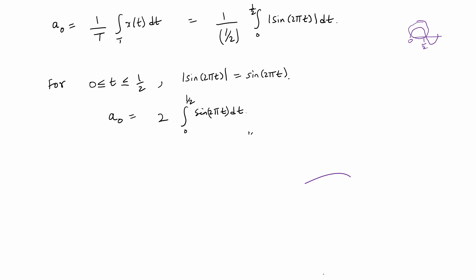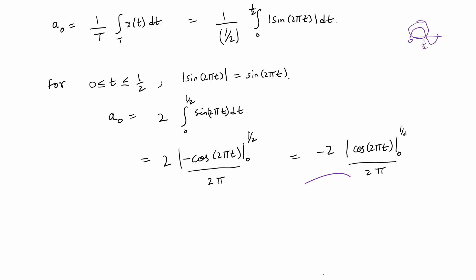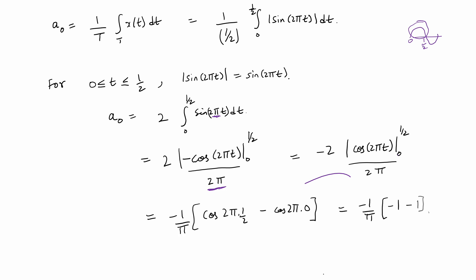The integral of the sine function is the negative cosine function. So integrating sin(2πt), a factor of 2π appears in the denominator. Substituting limits 0 and 1/2, we need cosine(2π × 1/2) = cosine(π) = −1 and cosine(0) = 1. With the factor of −1/π outside, this makes a₀ = 2/π.